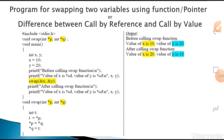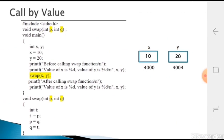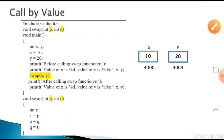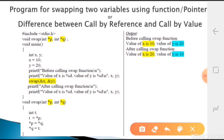The difference between call by value and call by reference: in call by value, only the values of x and y are passed - those values are swapped temporarily inside the function only. In call by reference, the addresses of the variables are passed, and the values at those addresses are swapped - so the actual variables are modified. Through call by reference, the actual swap happens. This is the key difference between call by value and call by reference.